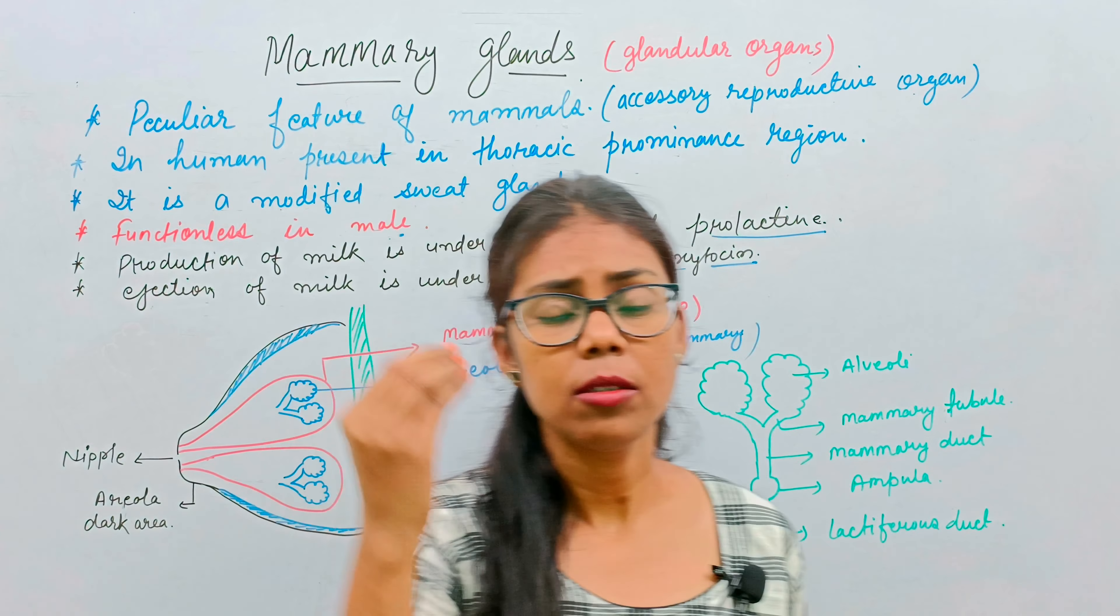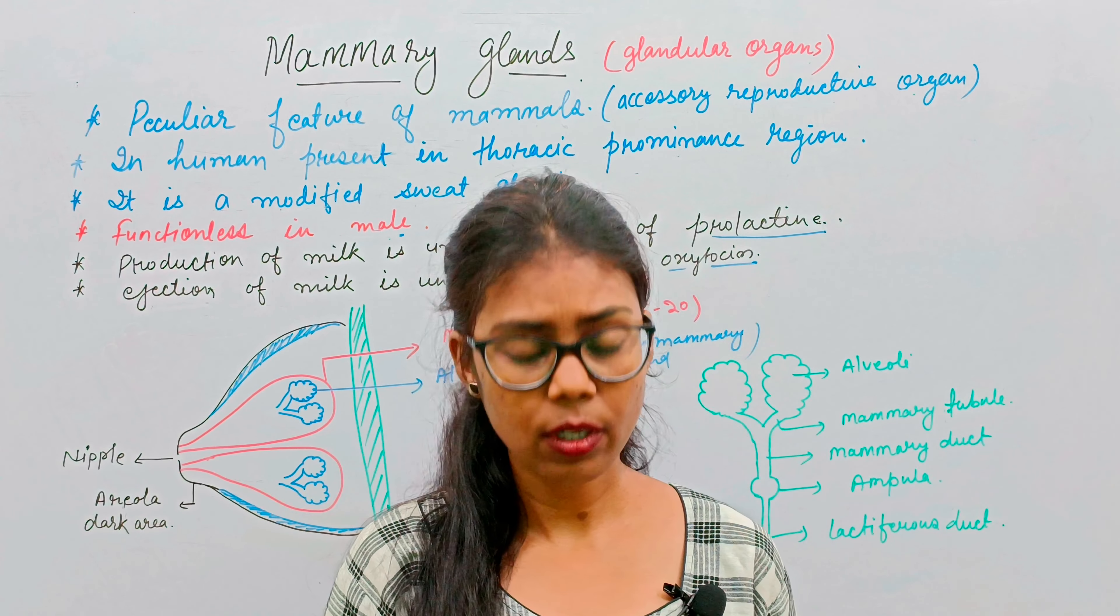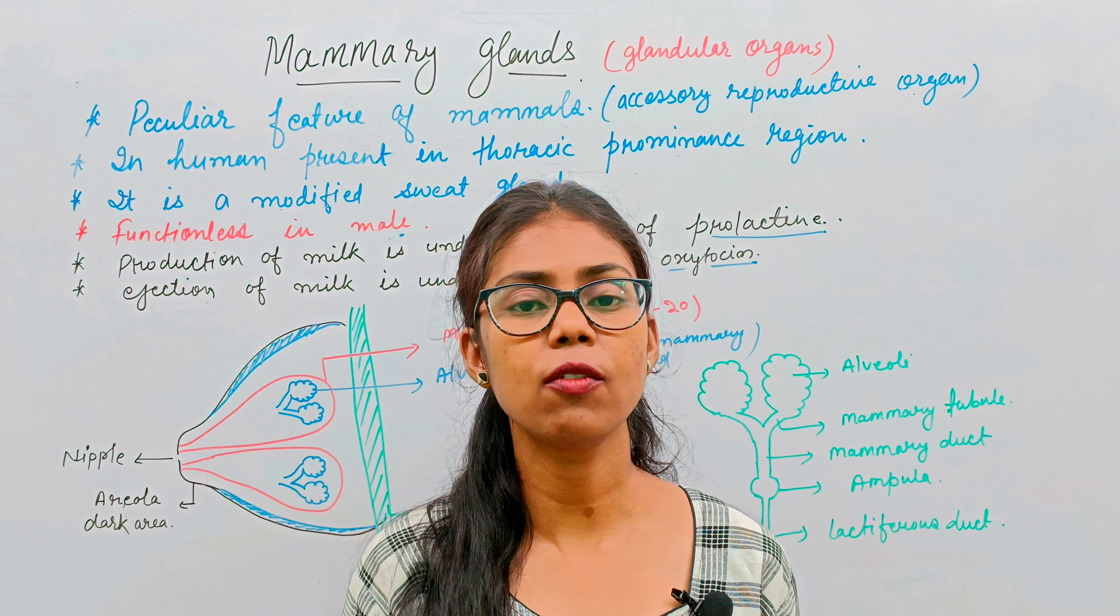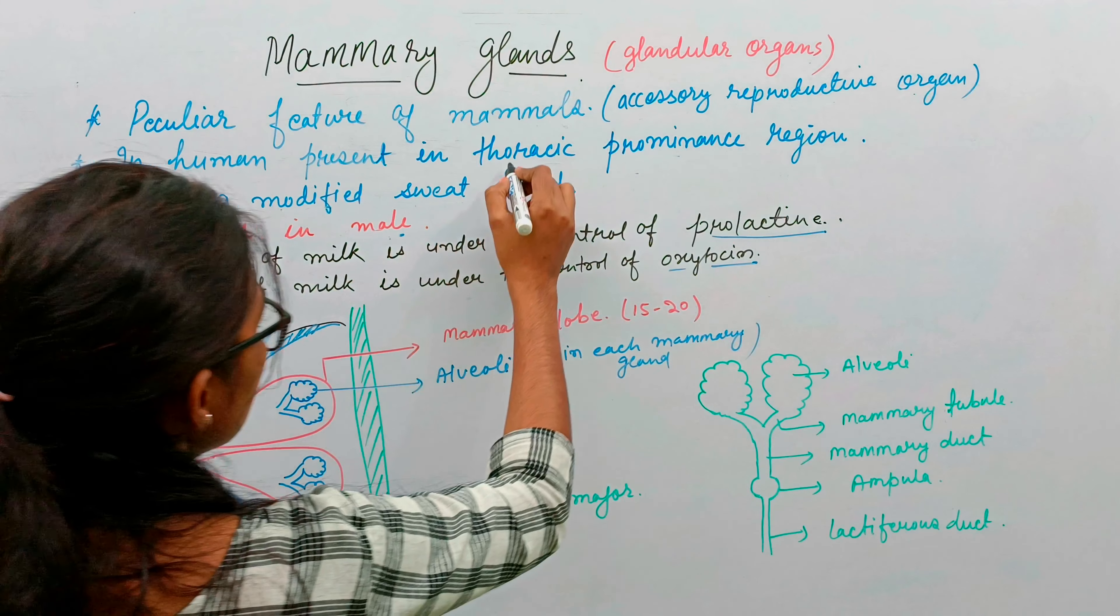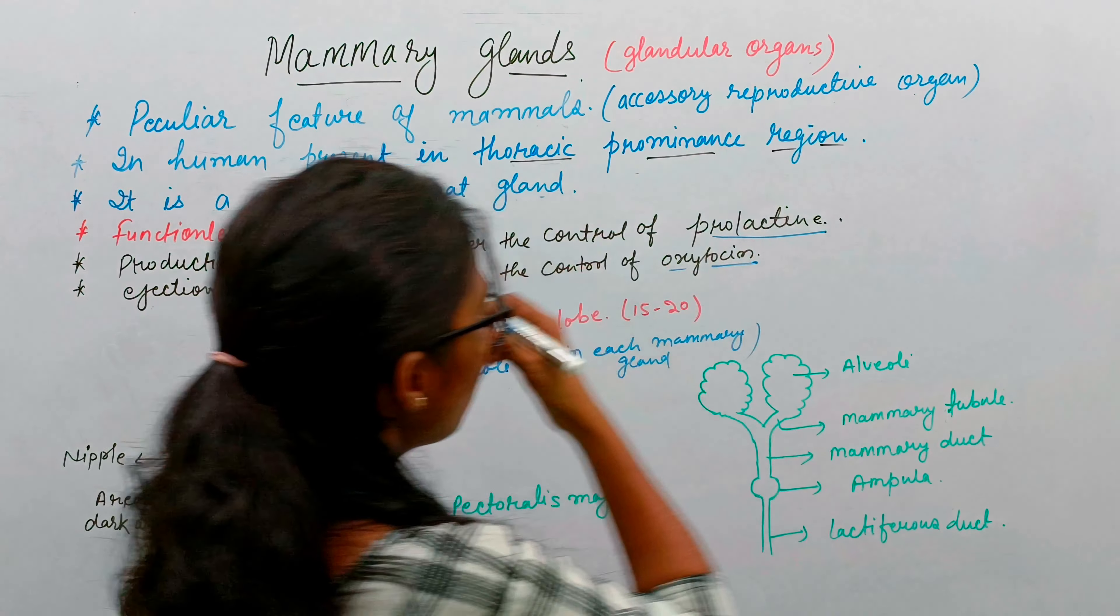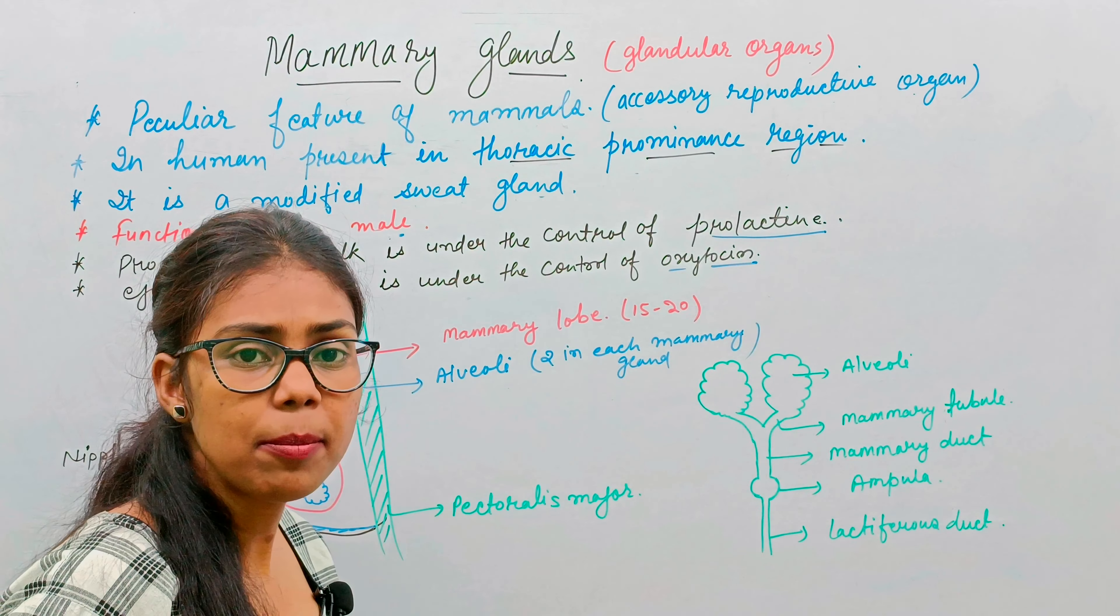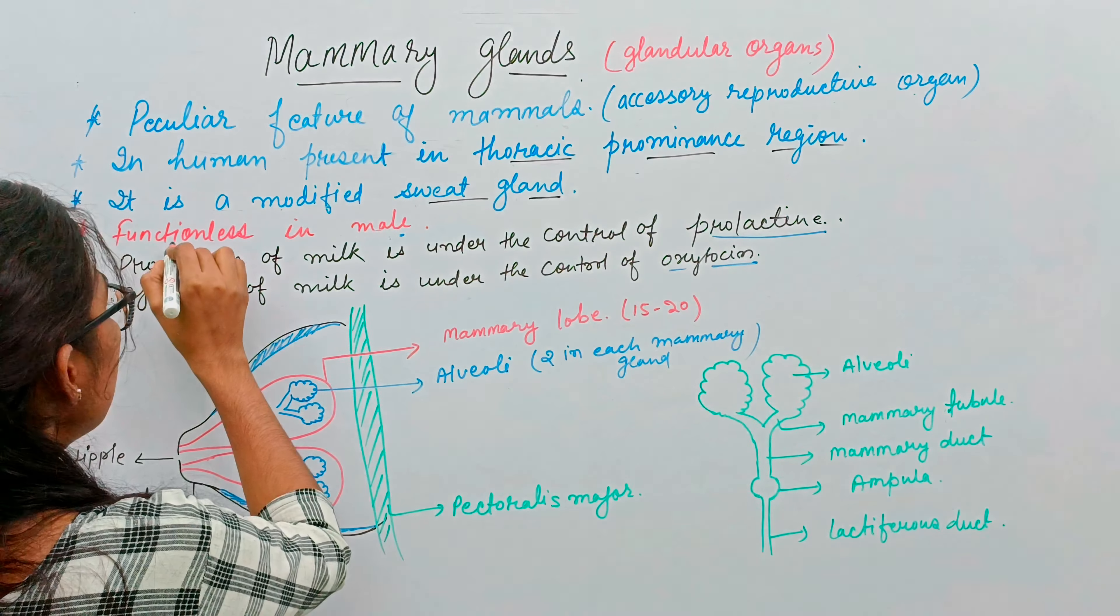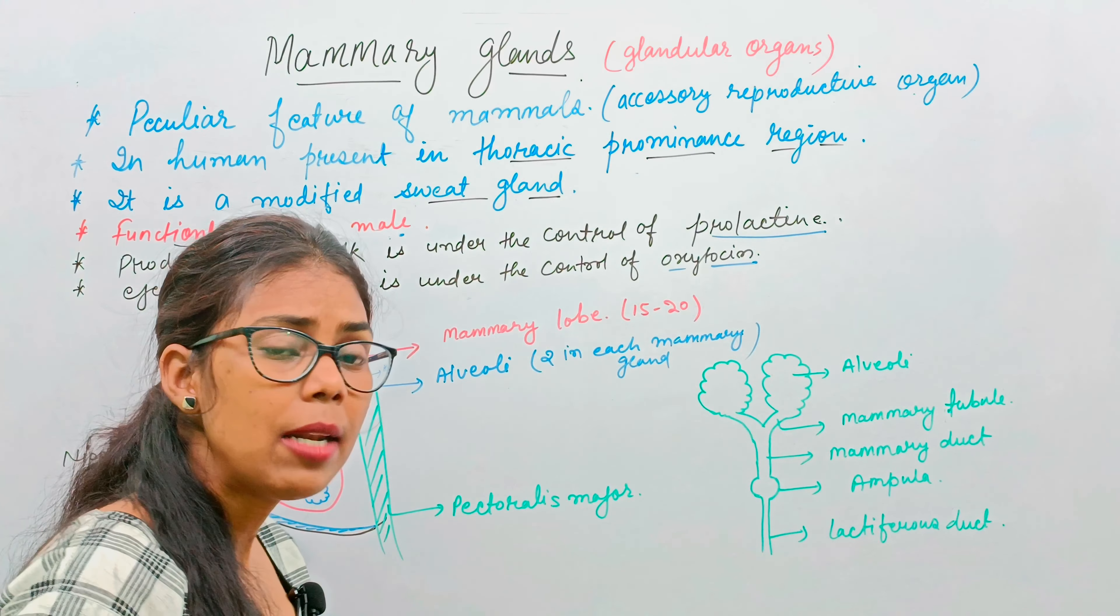This is a modified sweat gland. Our body's sweat gland is modified and converted to mammary glands. It is present in the thoracic prominence region. It is also present in the male.